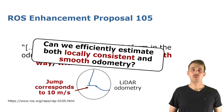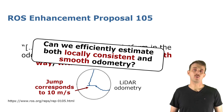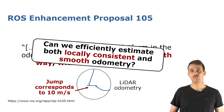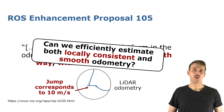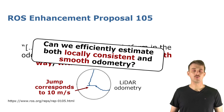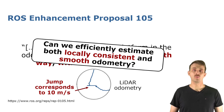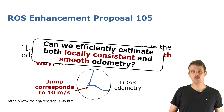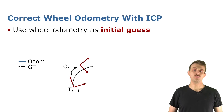So the question is: can we efficiently estimate an odometry that is locally consistent and smooth? We do not want to do that by fusing different sources of odometry — we want to directly and efficiently estimate an odometry that is close to the reference, consistent, and also smooth.